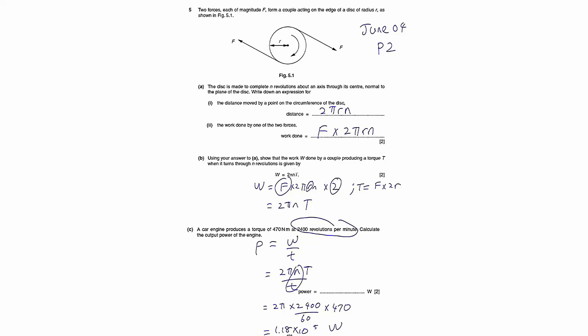For this question, they mentioned the two forces acting on the disc and the radius of the disc. If it is meant to complete n revolutions about the axis through the center, imagine the axis is protruding out from the center of the circle.